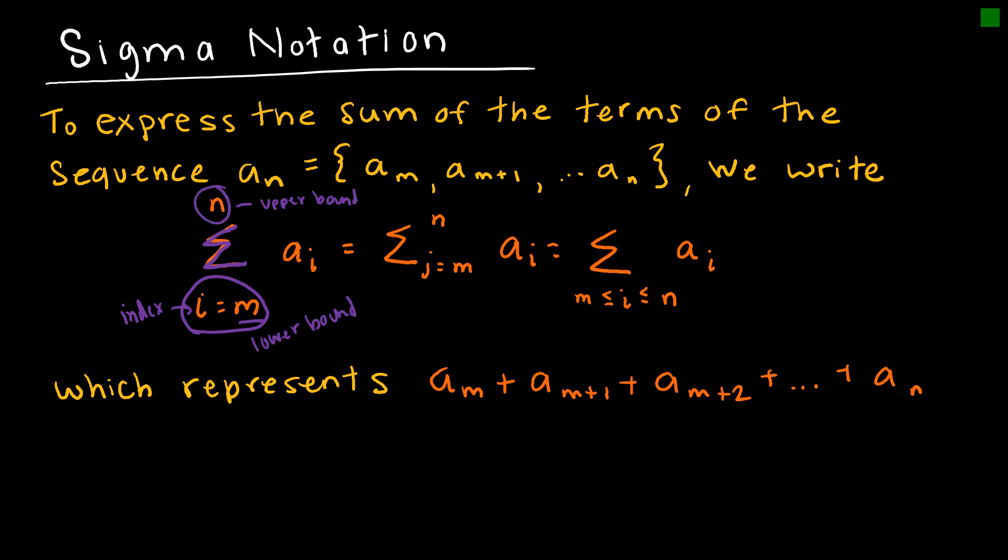You might also see it with those same values out front and you can use I for index, you can use J for the index, sometimes you'll see K as the index, etc. Or you might actually see it written like this, not quite as often, but again it's just a sleeker way of writing it and saying that I goes from M to N.